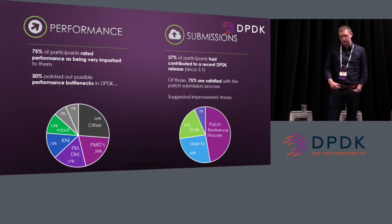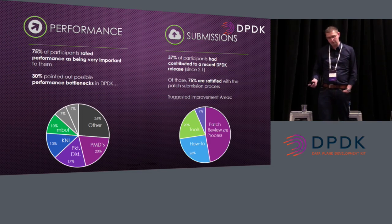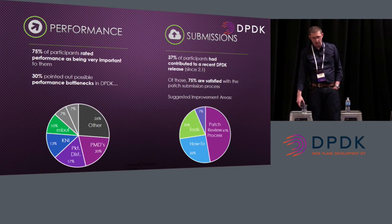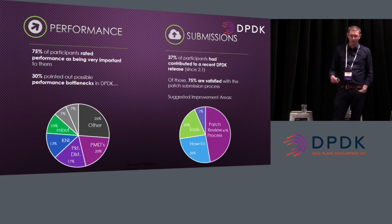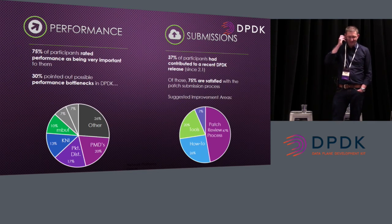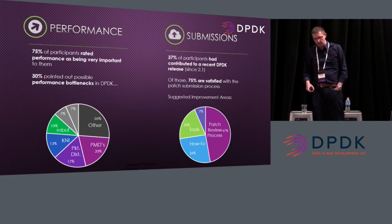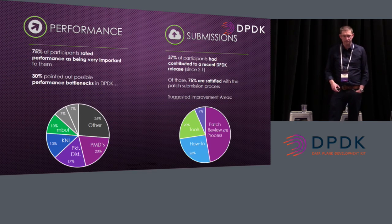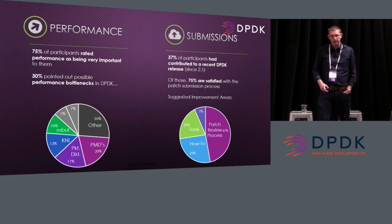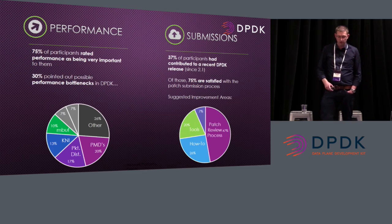On performance: not surprisingly, 75% rated performance as very important. As mentioned, 30% pointed out possible bottlenecks in DPDK. We tried to group these into certain areas — though the 'other' category is the biggest piece in the chart. More specifically, there was a lot of feedback around performance bottlenecks in the PMDs, particularly I40E. Packet distributor was another one. KNI and MBUF were the other two that jumped out from the survey.